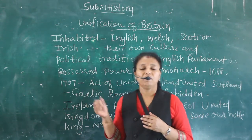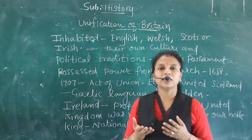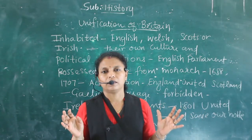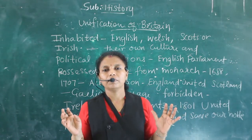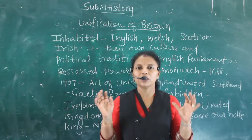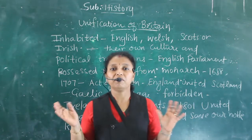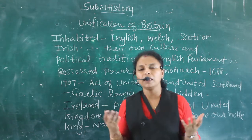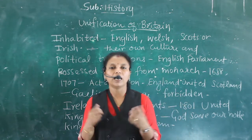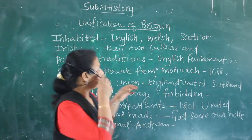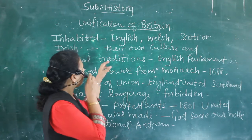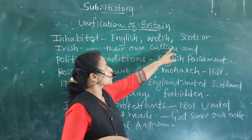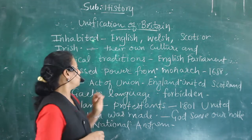Before the 18th century, Britain as a single nation was not existing. Britain, like one unified nation, was not there before the 18th century. It was inhabited by many peoples — English people, Welsh, Scots, and Irish people.